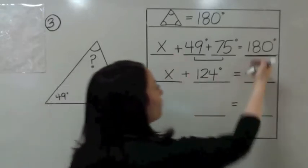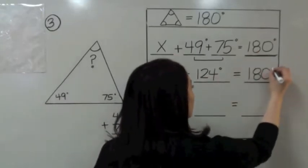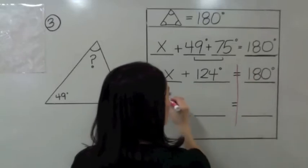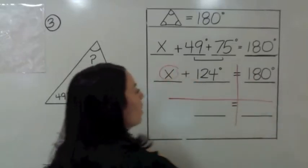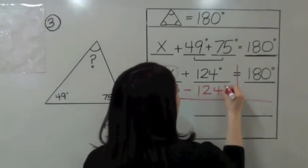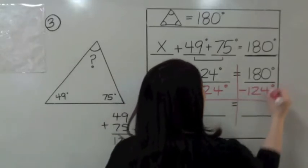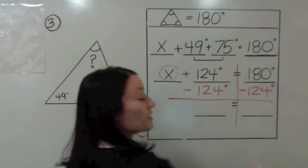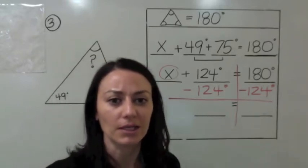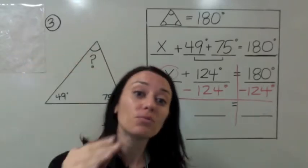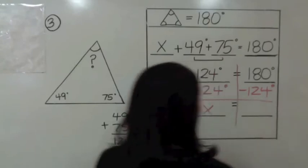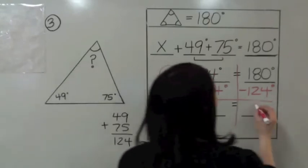Make this symbol to show we're combining like terms: 49 plus 75 is 124 degrees. Rewrite X and bring down 180 degrees. Now you're ready to solve for X. Make a T to separate both sides of the equation, make some space, and circle X. What is the opposite of 124? It's negative 124 degrees. You're going to subtract 124 from 180 — do not put 124 minus 180. We take 180 minus 124. 180 minus 124 is 56.